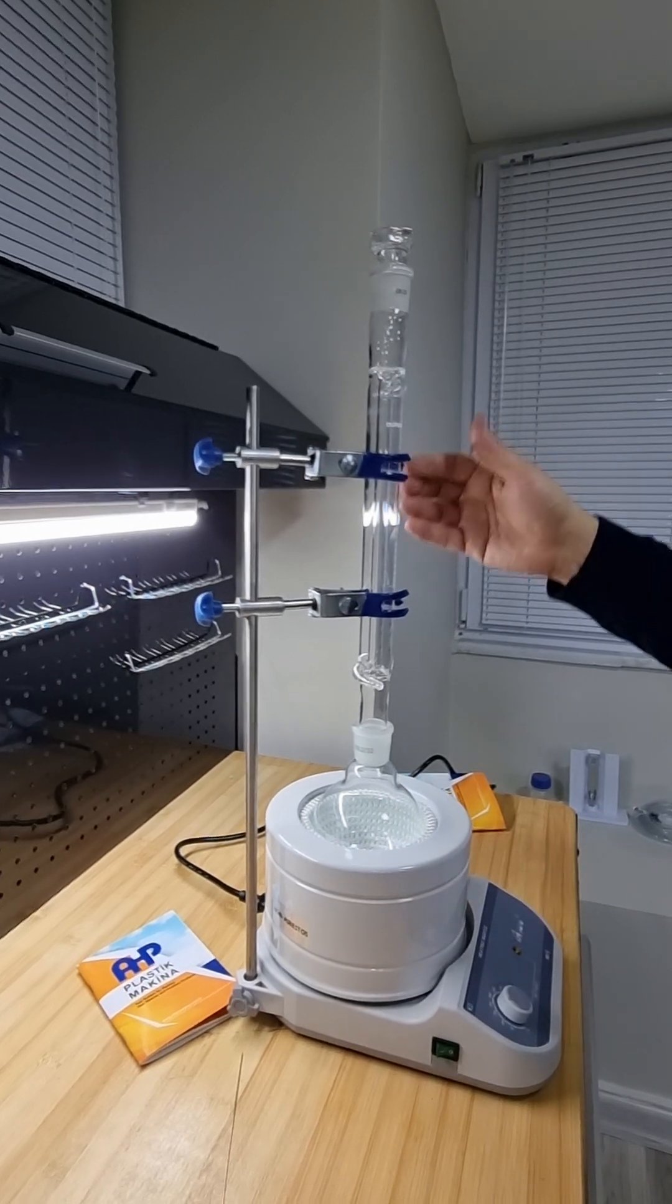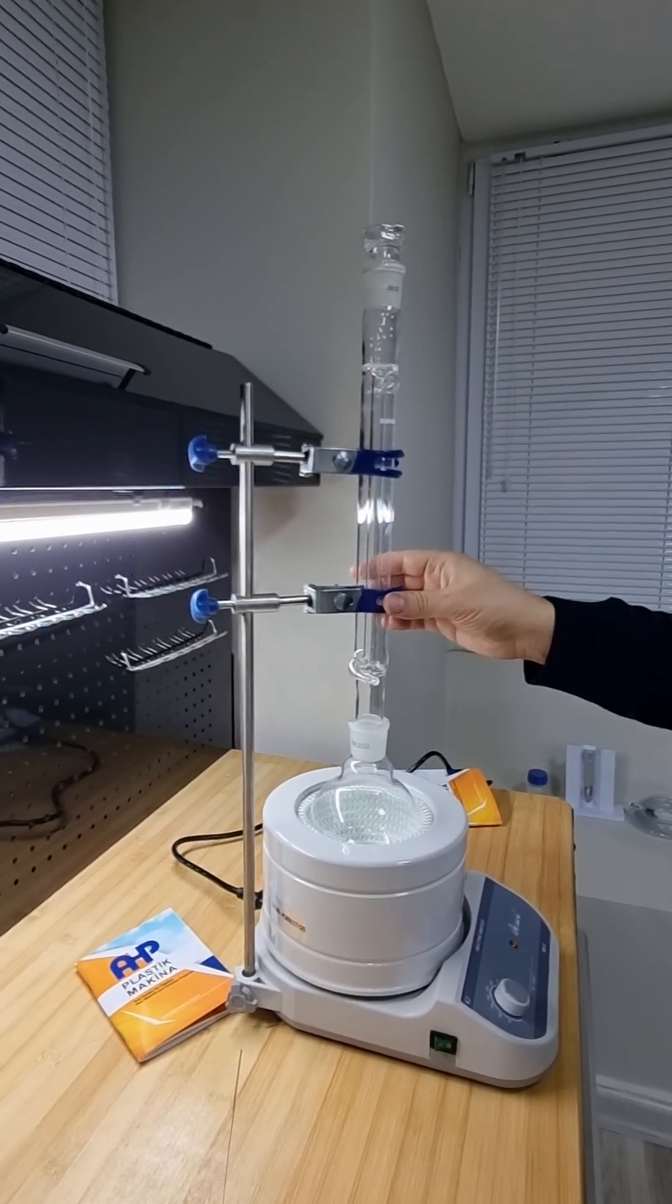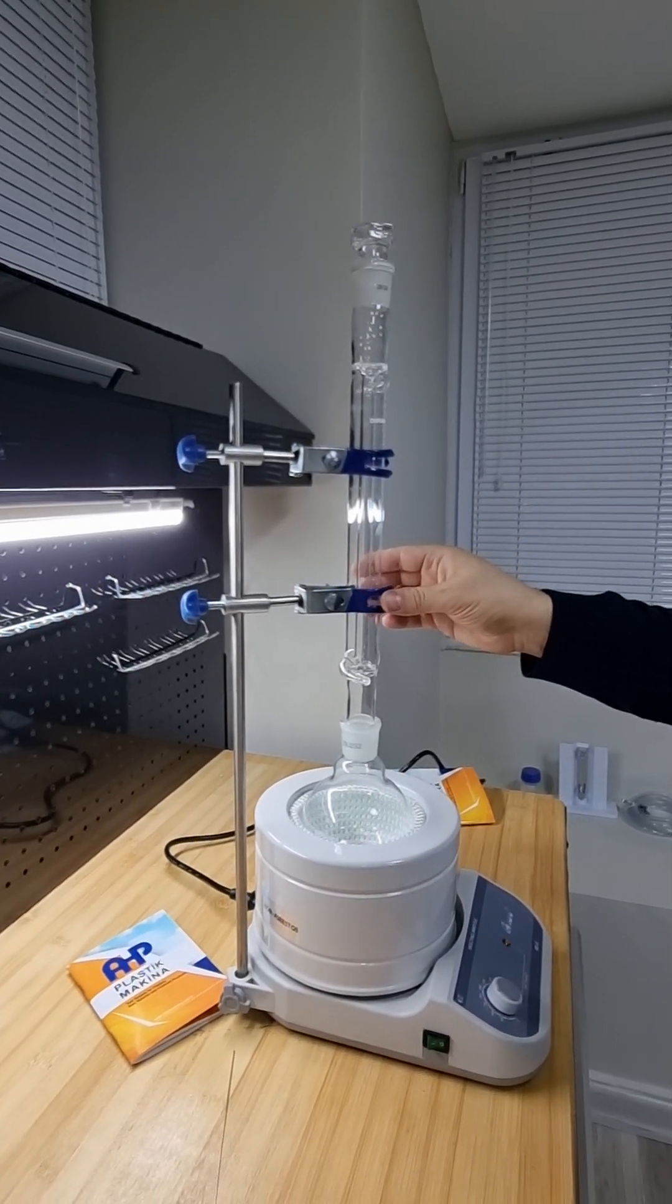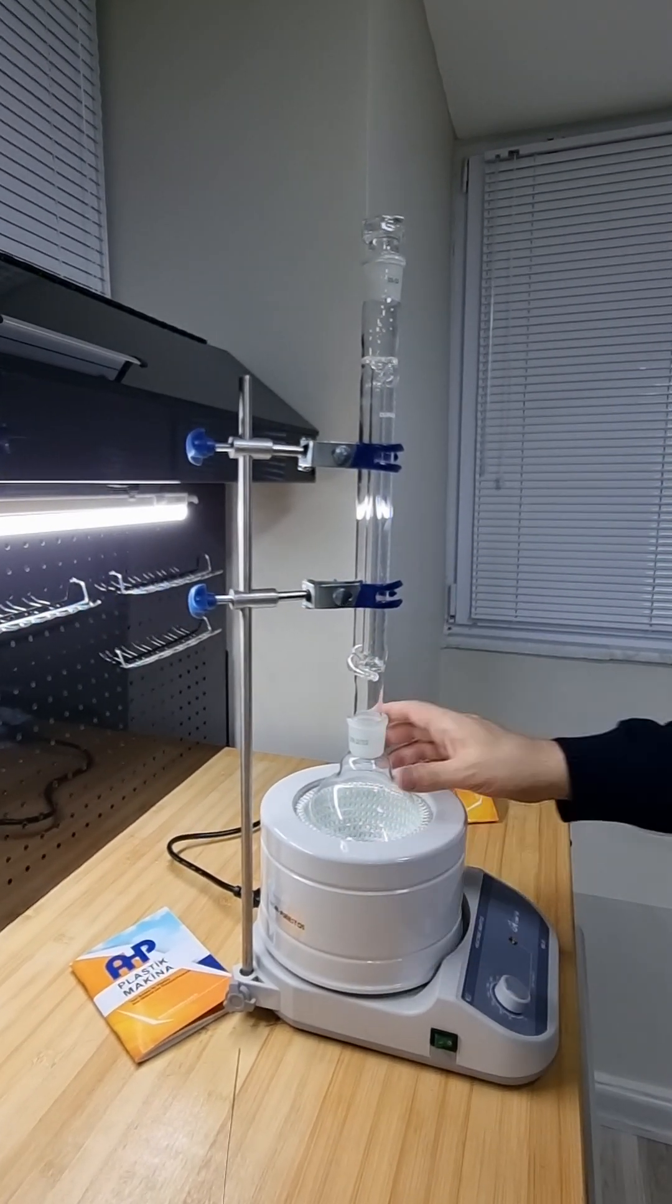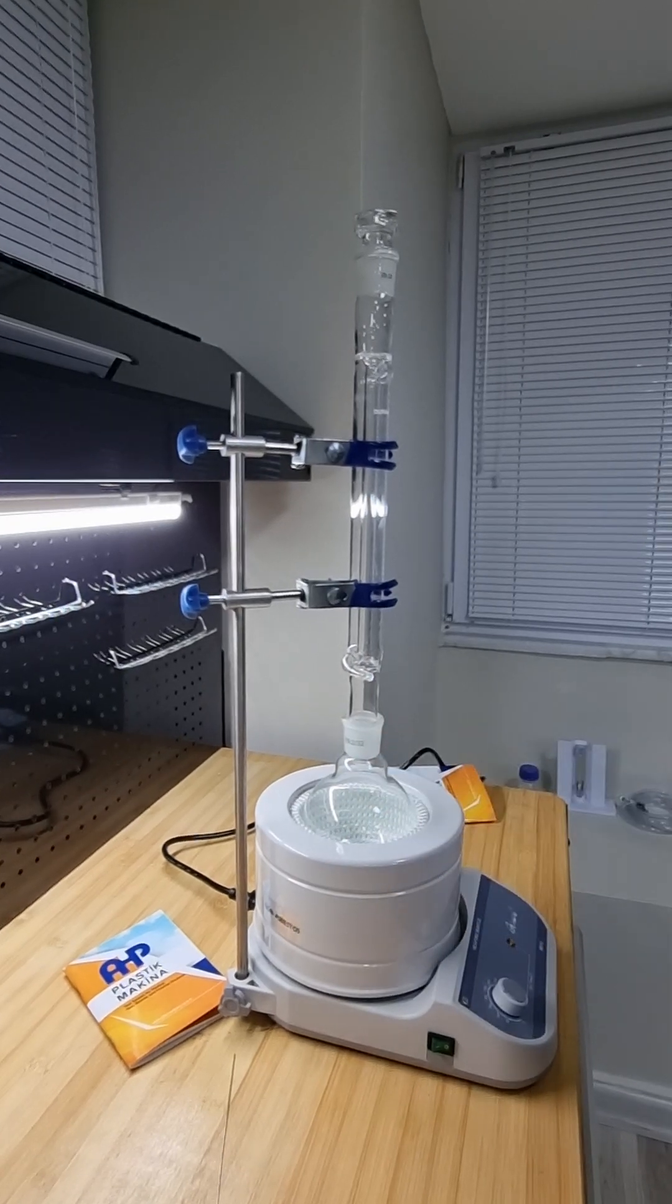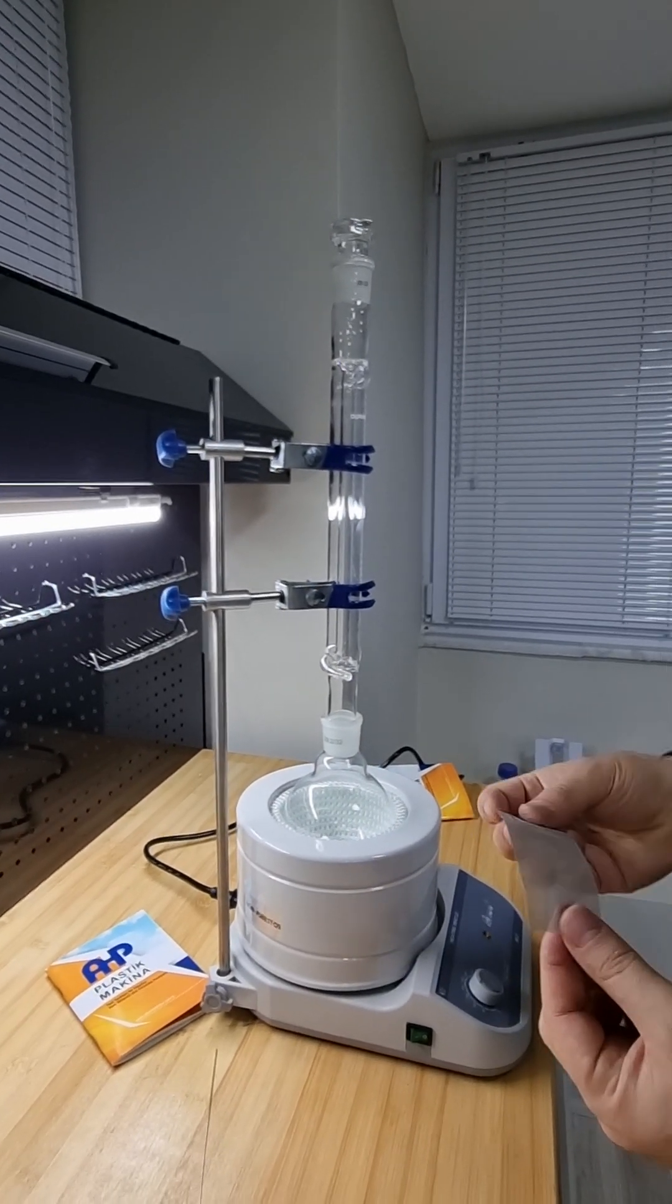We need a condenser column, a round ring, a stand, ring clips, stand clips, heating mantle, flask, and 120 mesh stainless steel.